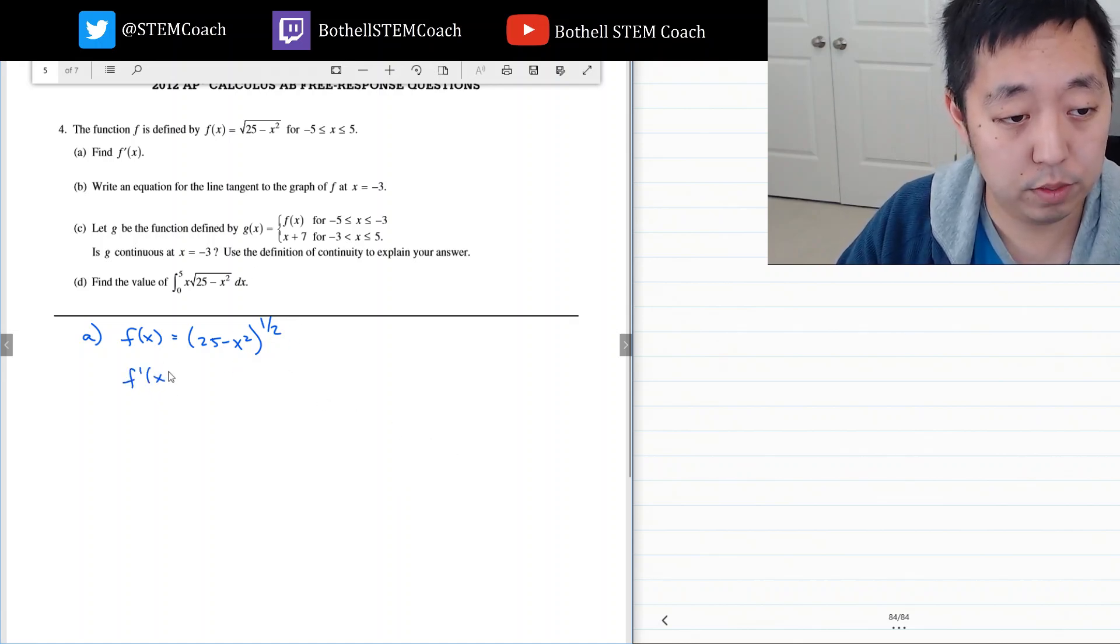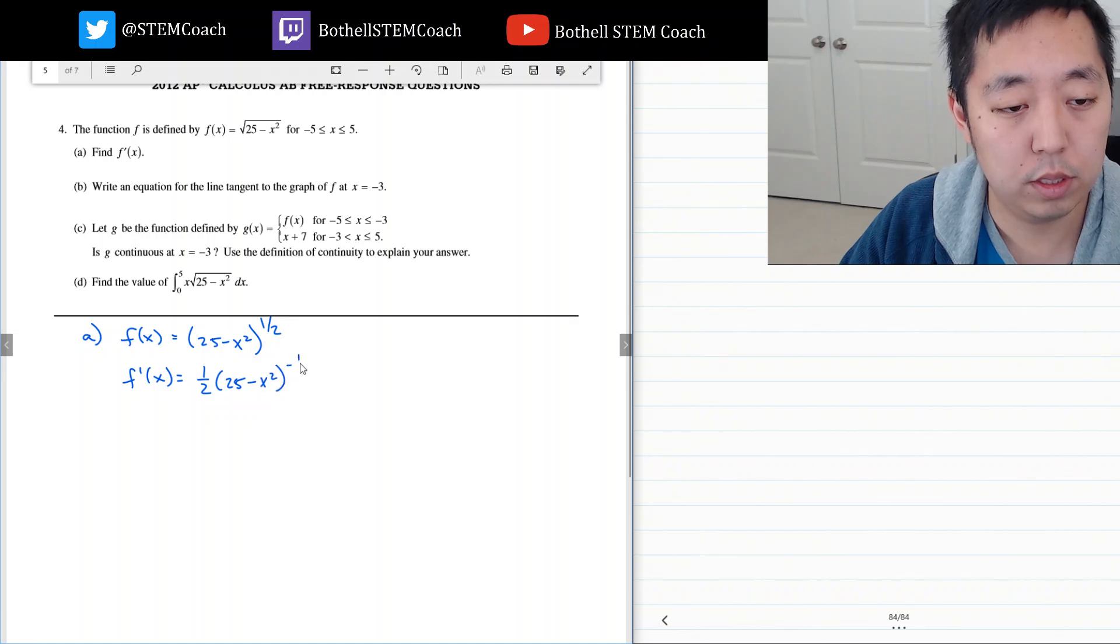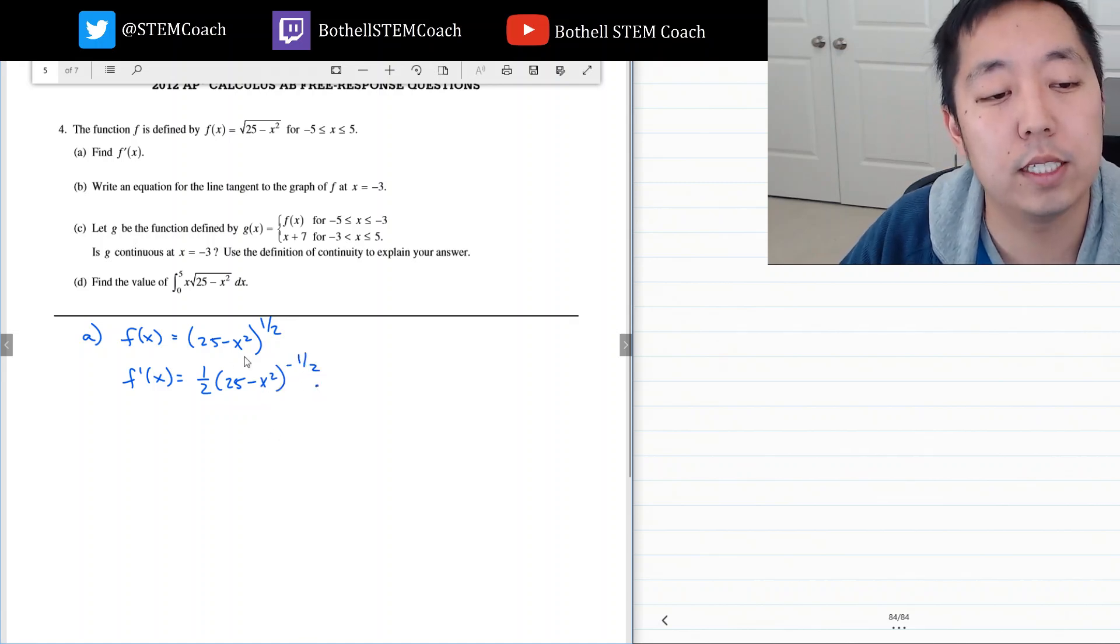So f prime of x, I always kind of outside in, outside I do power rule. But since the inside is not x I got to take the derivative of the inside.